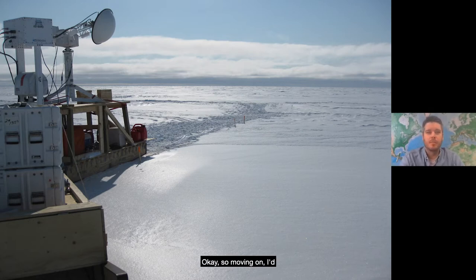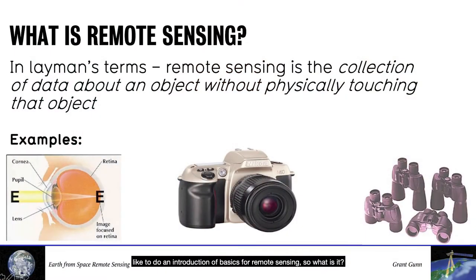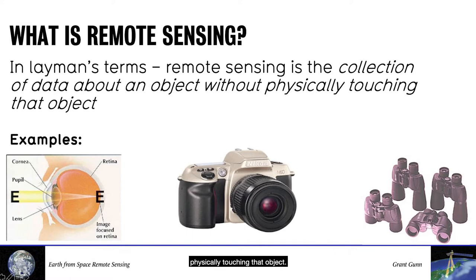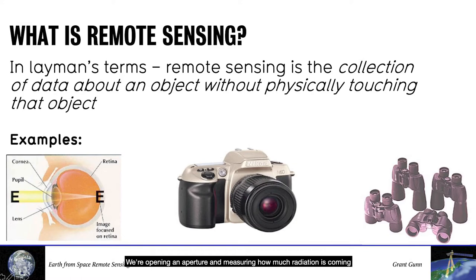Moving on, I'd like to do an introduction of basics for remote sensing. So what is it? In layman's terms, remote sensing is the collection of data about an object without physically touching that object. A good analogy is your eyeball — you're gleaning information about the color of an object, the texture, how far it is away from you, all without touching that object. Remote sensing is the same thing. We're opening an aperture and measuring how much radiation is coming from that target at a specific wavelength.